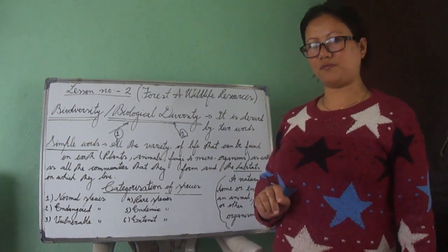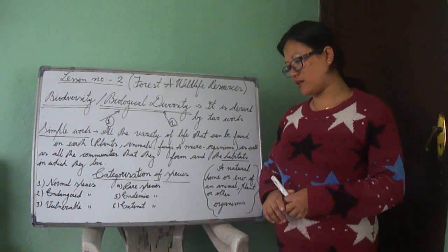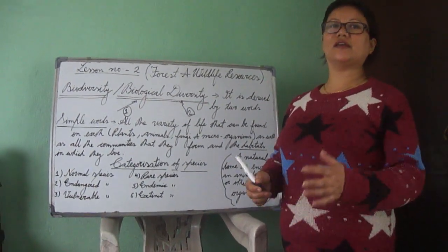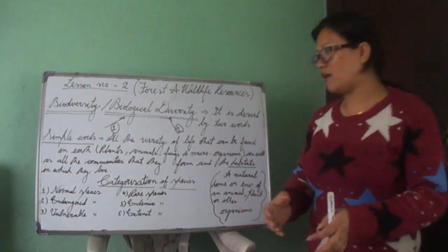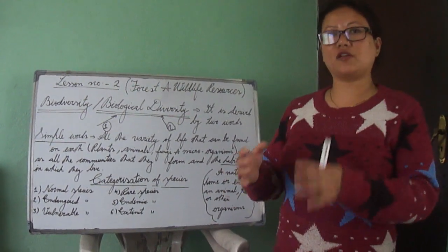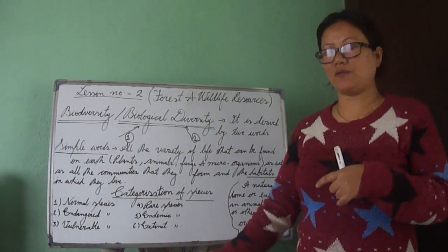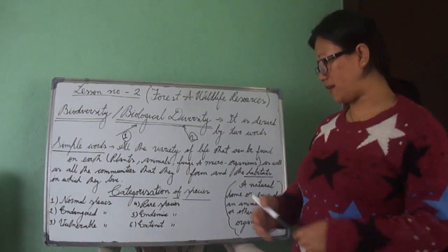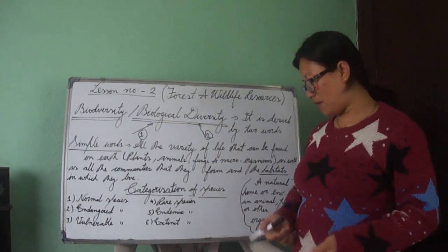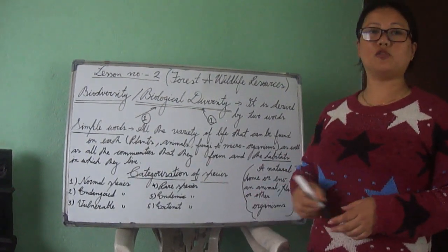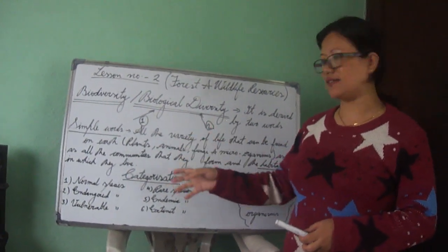Next we have Endangered Species. Their numbers are already quite low, and the way their population is decreasing, very soon a situation will come when you won't be able to see them in nature. Examples include black bucks, Indian wild ass, mountain gorillas, and sea turtles. Hunting of these species is not allowed because they are already very few in number.